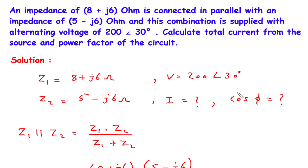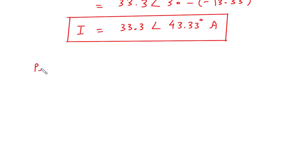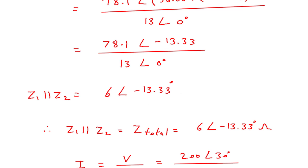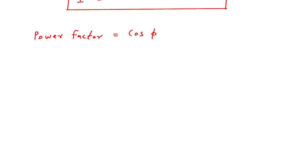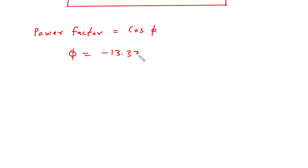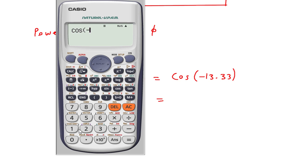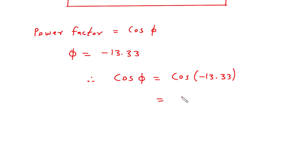Next we have to find cos phi, that is the power factor. The angle phi is equal to minus 13.33 degrees, taken from the impedance angle. Therefore, cos phi equals cos of minus 13.33 degrees, which equals 0.973. So the power factor cos phi is 0.973.